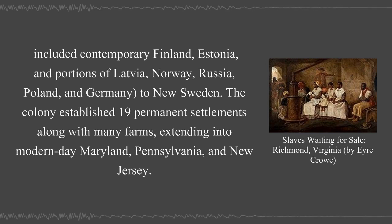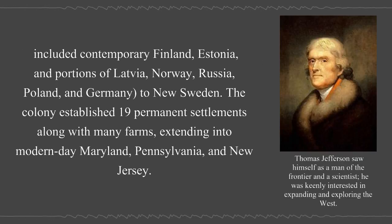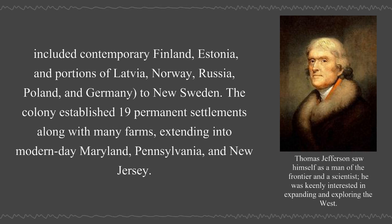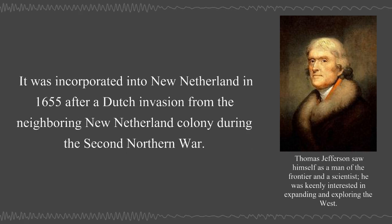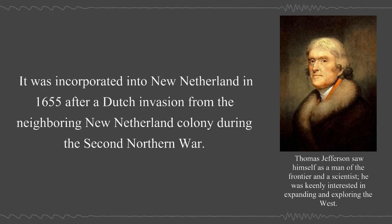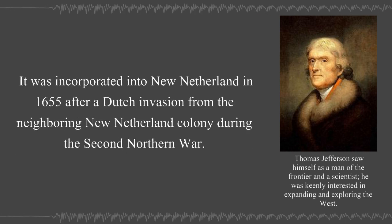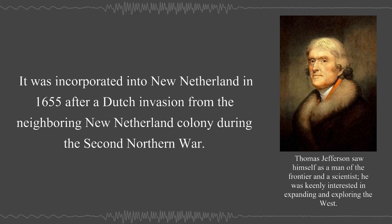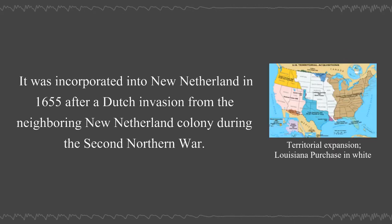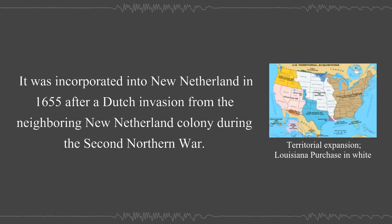The colony established 19 permanent settlements along with many farms, extending into modern-day Maryland, Pennsylvania, and New Jersey. It was incorporated into New Netherland in 1655 after a Dutch invasion from the neighboring New Netherland colony during the Second Northern War.